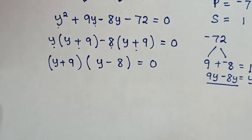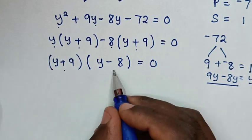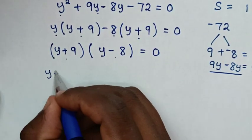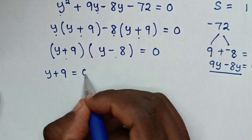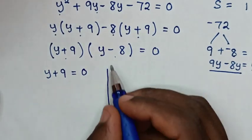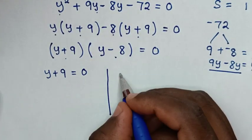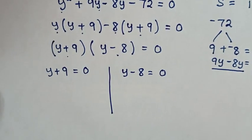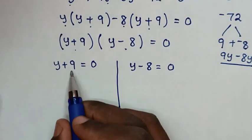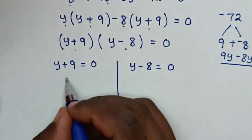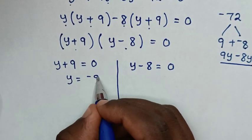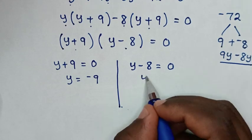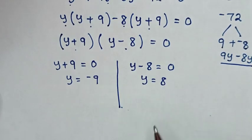Then from this equation we have two solutions. First solution: y plus 9 is equal to 0. Another solution: y minus 8 is equal to 0. From the first solution, we take 9 to the right side, so y is equal to negative 9. And from the second solution, we take negative 8 to the right side, so y is equal to 8.